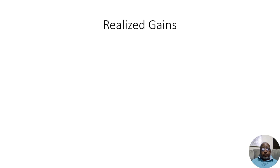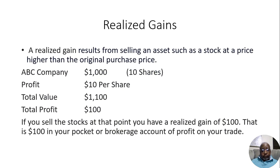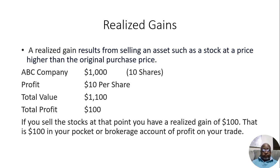So we're going to go through a few examples here. First, let me give a definition. A realized gain results from selling an asset, such as a stock, at a price higher than the original purchase price.